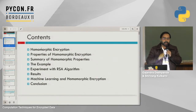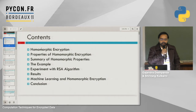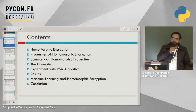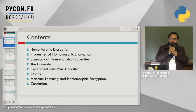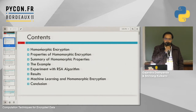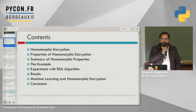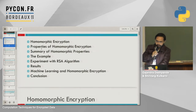Today I am going to discuss what is meant by homomorphic encryption, properties of homomorphic encryption, a summary of homomorphic properties, then an example, an experiment with the RSA algorithm, results, machine learning and homomorphic encryption, and finally the conclusion.